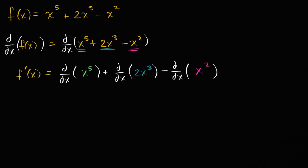So what is this going to be equal to? For x to the fifth, we can just use the power rule. We bring the five out front and decrement the exponent by one, so it becomes five x to the five minus one power, which of course is just four — so five x to the fourth.